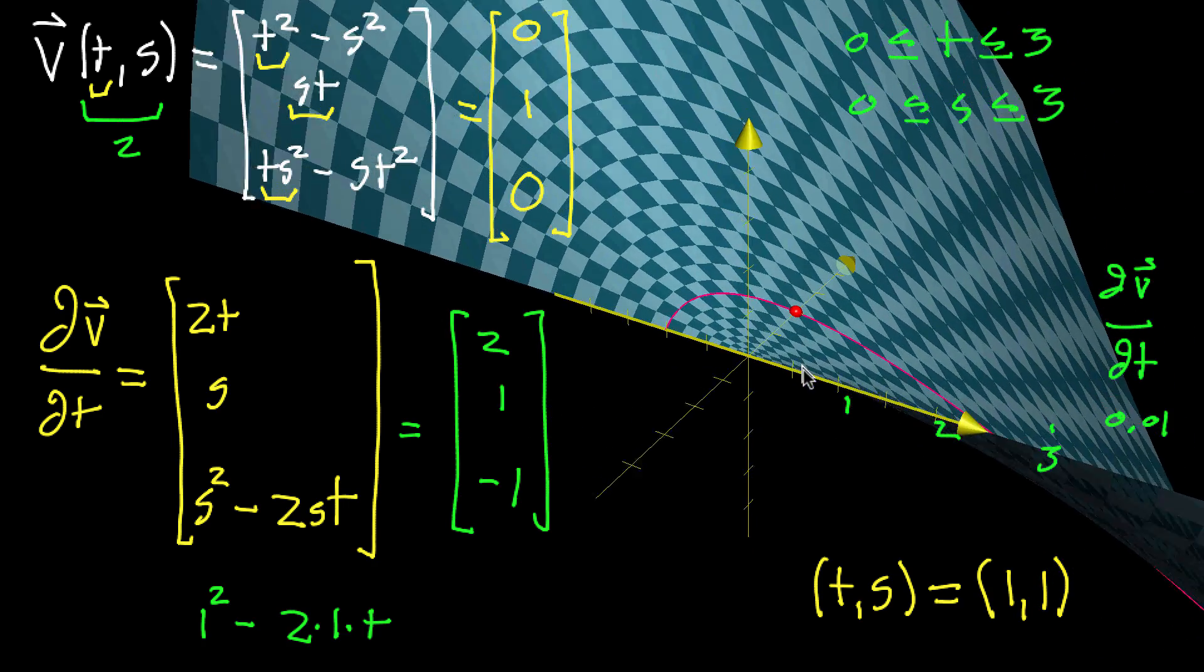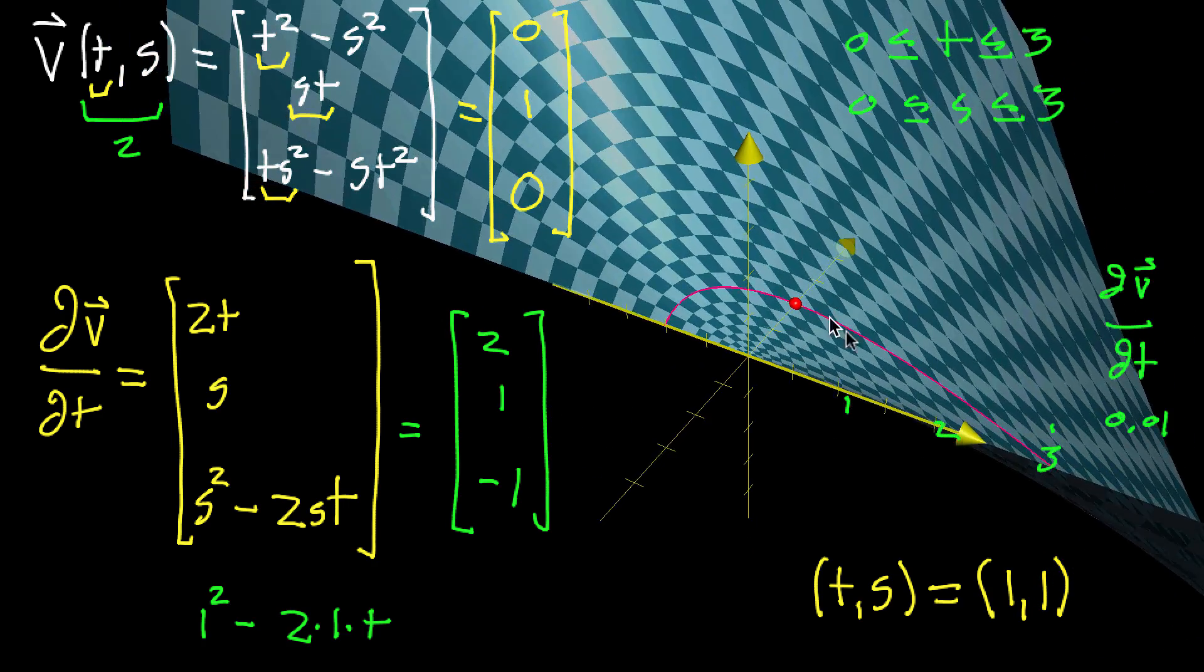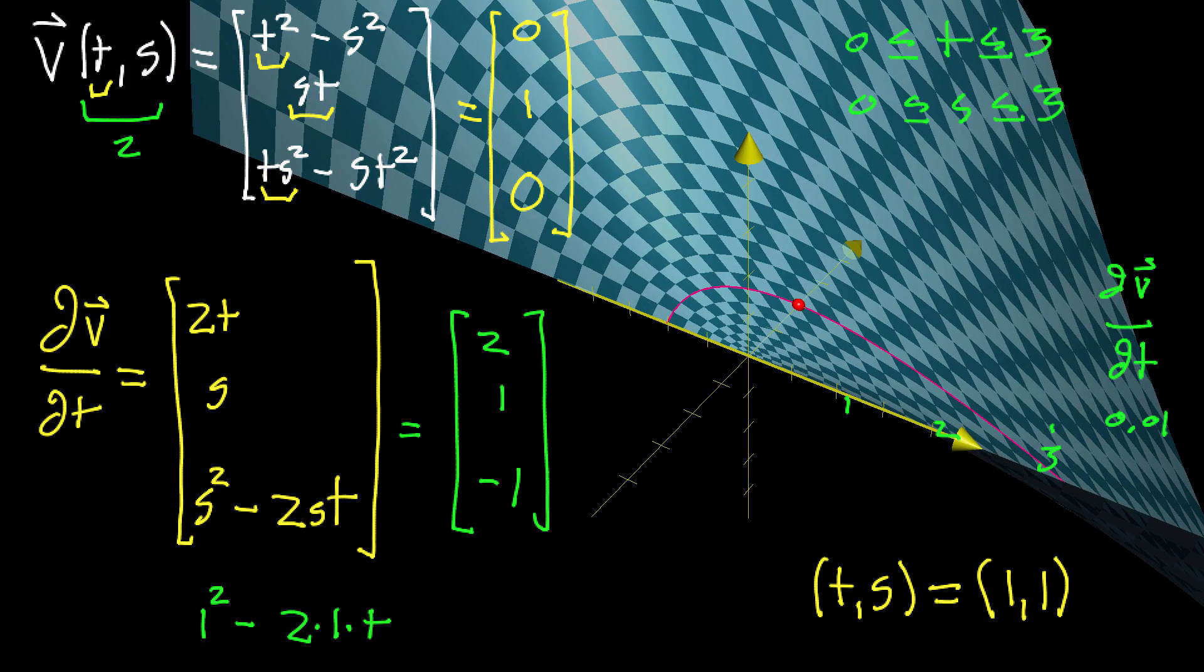And again, it's not the tiny nudge vector itself when you nudge the input and you get just a little smidgen in the output space here. But it's that divided by the size of the nudge. So that's why you'll get normal-sized vectors rather than tiny vectors. And in the next video I'll do the same thing for what happens when you nudge in the s direction, just to get a better feel for what's going on in this example.